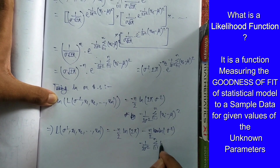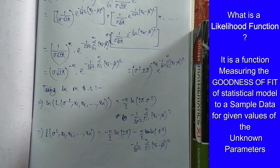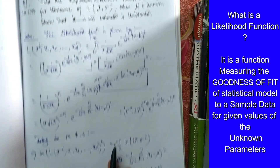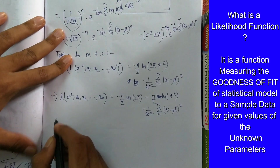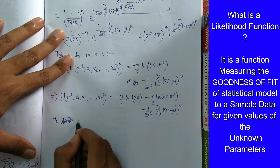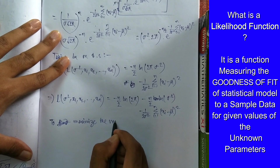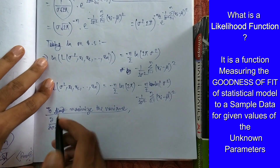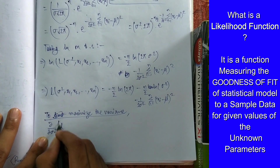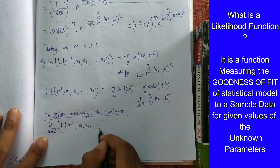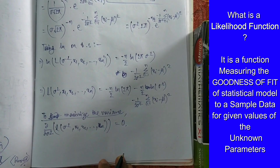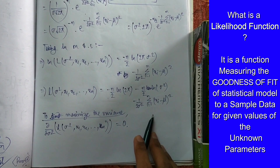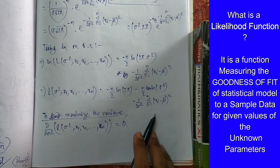Now we apply the property to maximize. Since our goal is to find the MLE for variance, we need to show that the partial derivative with respect to σ² of ln L(σ², x₁, ..., xₙ) equals zero. This means we take the derivative of the log-likelihood with respect to σ² and set it equal to zero to find the relation.